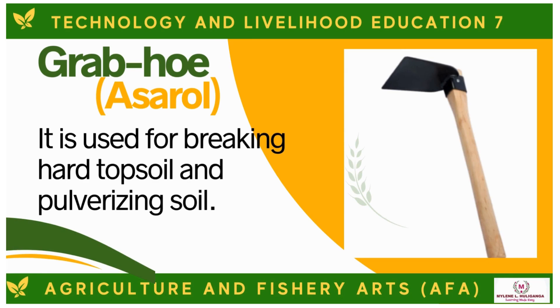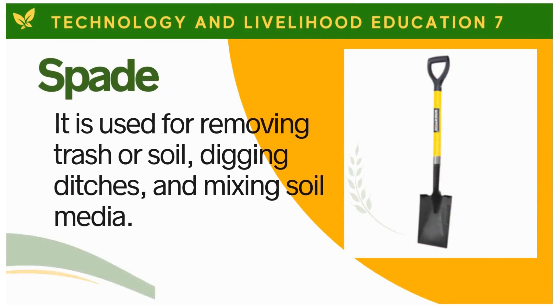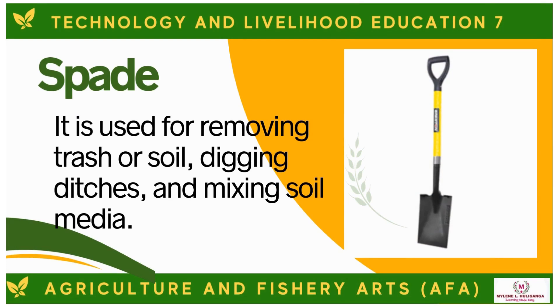The Grabhoe is used for breaking hard topsoil and pulverizing soil. The Spade is used for removing trash or soil, digging ditches, and mixing soil media.